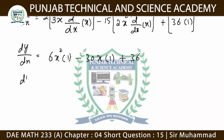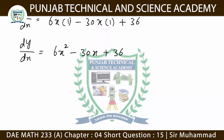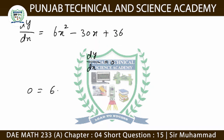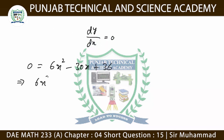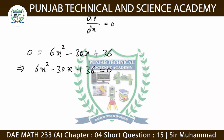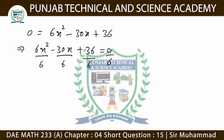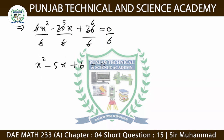So dy/dx = 6x² - 30x + 36. For finding the critical value or turning point, we set dy/dx equal to 0: 6x² - 30x + 36 = 0. We can see that all values are divisible by 6, so dividing both sides by 6 gives x² - 5x + 6 = 0.